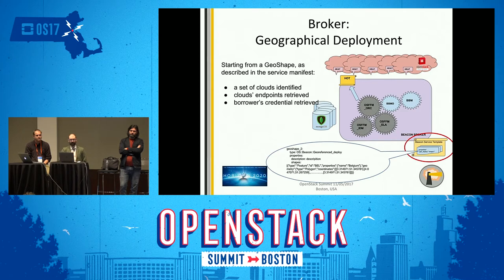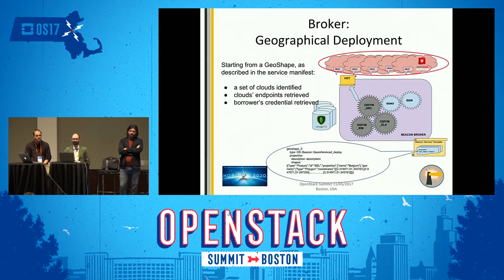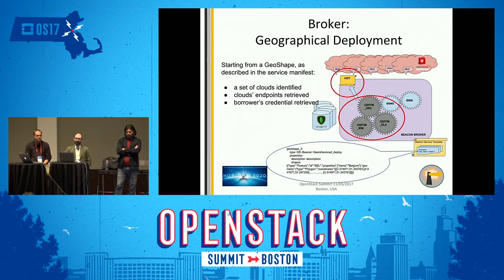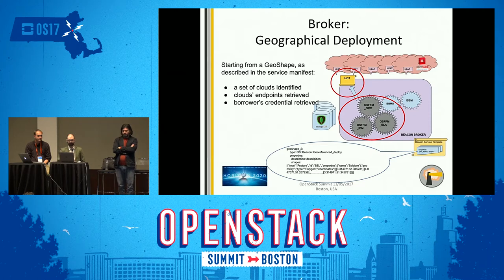Inside the BEACON service manifest, the broker takes the georeference resource and queries MongoDB to extract a set of clouds, their endpoints, and the credentials used to interact with those clouds. After this, we create the HOT manifest starting from the BEACON service template. The HOT manifest is contained inside the BEACON service template, and the beacon broker extracts each HOT manifest and provides it to the right cloud for deployment.